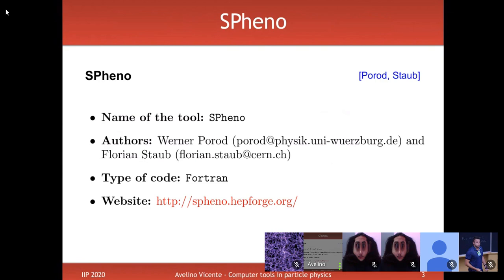SPheno is a Fortran code — Fortran is not as popular nowadays as Python or C++, but for numerical calculations it is well known as a reliable language. SPheno was originally created by Bernard Porod, and more recently Florian Staub — the creator of SARAH — has made important contributions. Together they worked on integrating these two tools into a single one. What we did yesterday and what we will do again today is: create routines for your model with SARAH, pass that information to SPheno, and compile everything together to get numerical results.